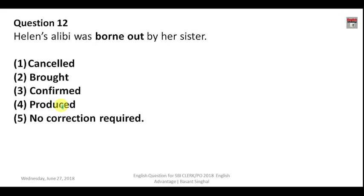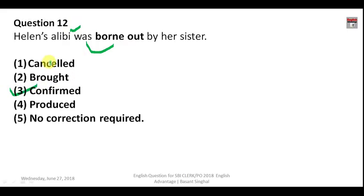Question number twelve: 'Helen says Helen's alibi was born out by her sister.' 'Born out' is the third form of the verb 'bear out'. 'Bear out' means to confirm something. An alibi is a kind of evidence. So the correct answer is option three — confirmed.